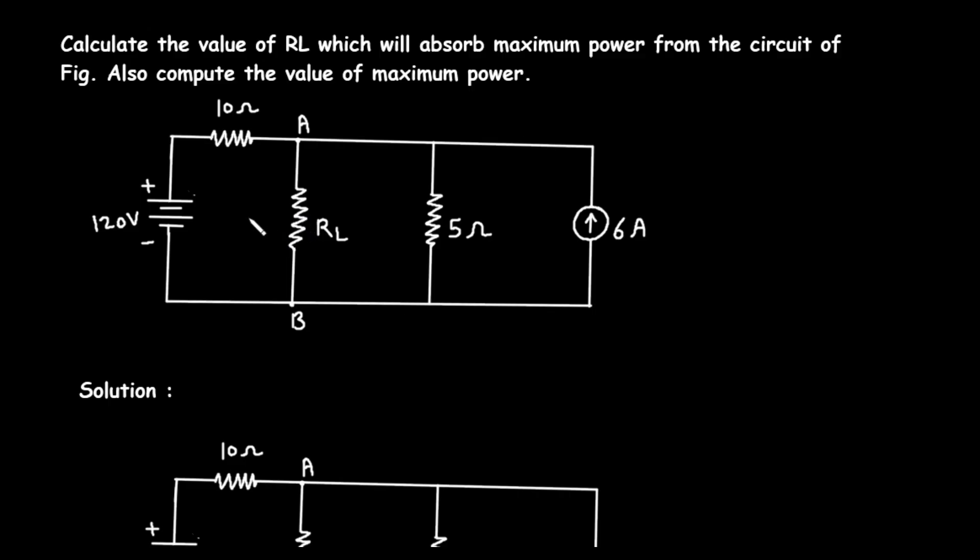Let's begin by looking at the original circuit diagram. We have a 120-volt DC voltage source on the left. This source is connected in series with a 10-ohm resistor. This combination is then connected to a central branch containing our variable load resistor, RL. In parallel with this central branch, there is another branch on the right. This rightmost branch contains a 5-ohm resistor in parallel with a 6-ampere DC current source, with the current flowing upwards. The load resistor, RL, is connected between two terminals, which are labeled A at the top and B at the bottom.